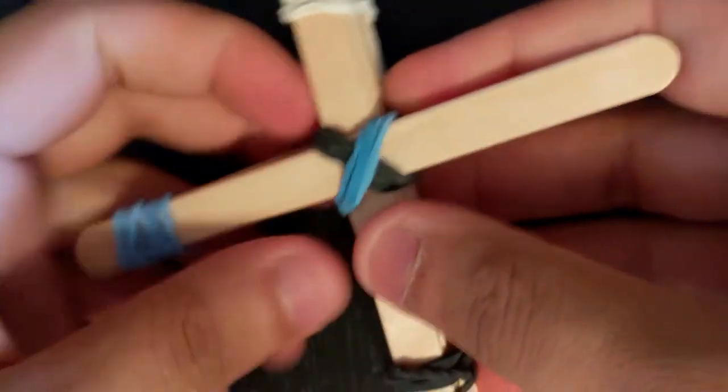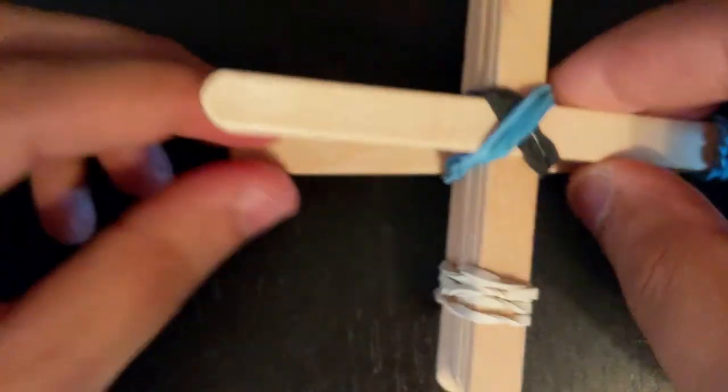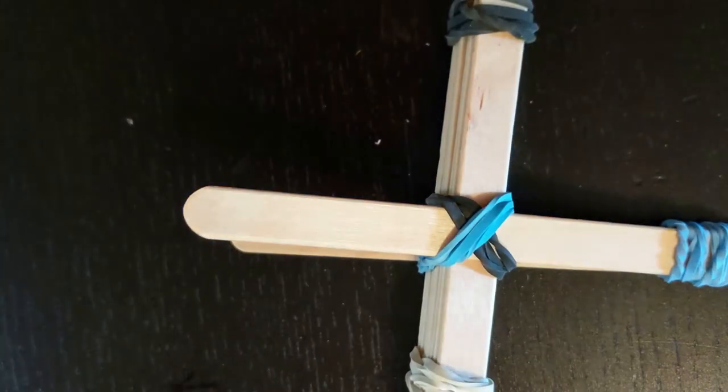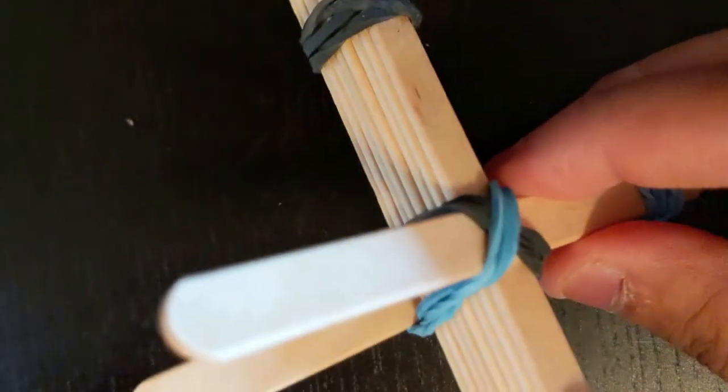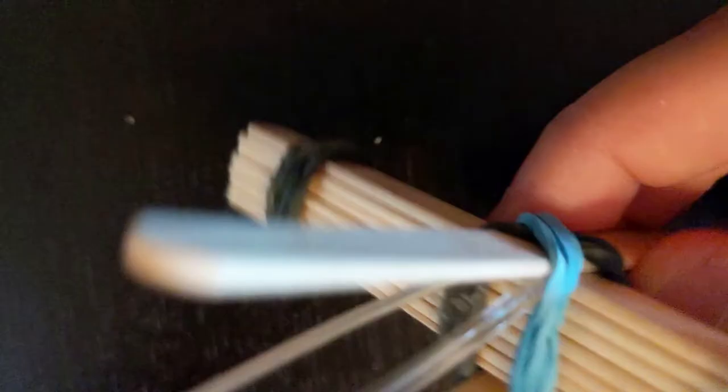Once you have used both these rubber bands to secure the stack between both popsicle sticks, you will notice it looks like an X on top of your catapult holding it all together. We're almost finished.